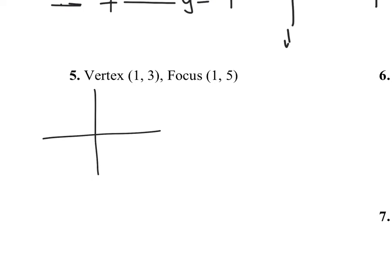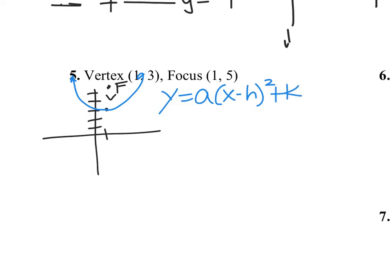Start by drawing a picture. Vertex is at 1, 3 and focus is at 1, 5. This parabola opens up. Since the vertex is not at the origin, the general equation is y equals a times (x minus h) squared plus k. I need to find a, h, and k. H and K come from the vertex, so I can plug in right away: y equals blank times (x minus 1) squared plus 3.